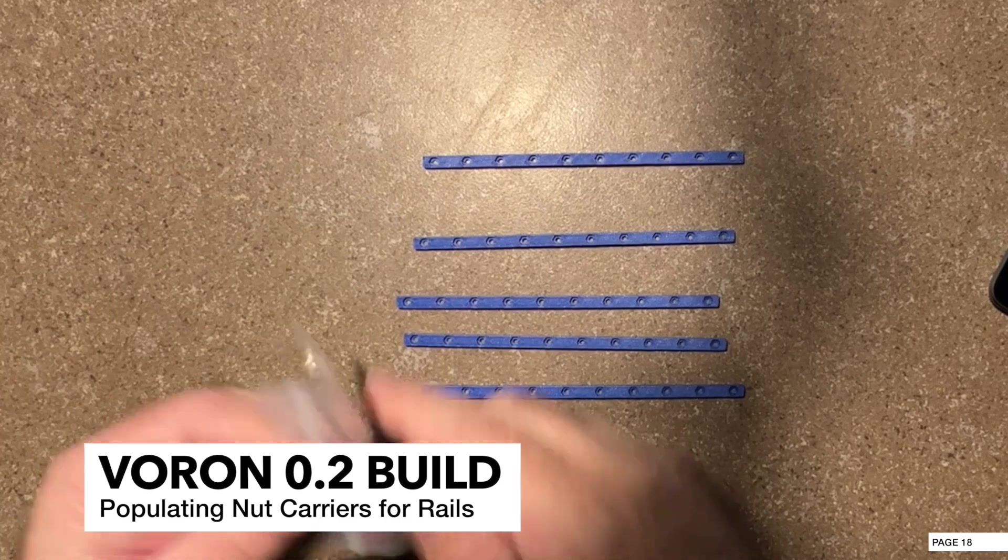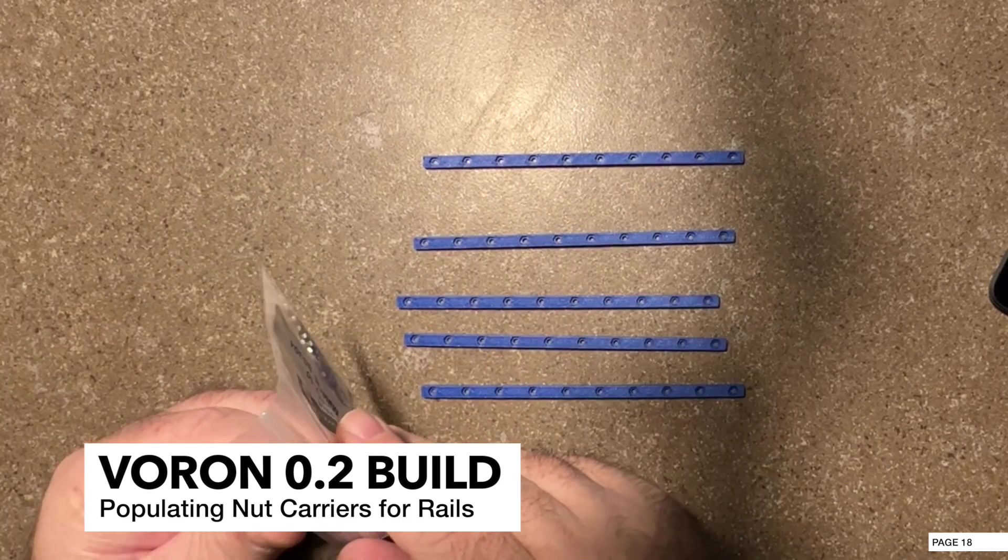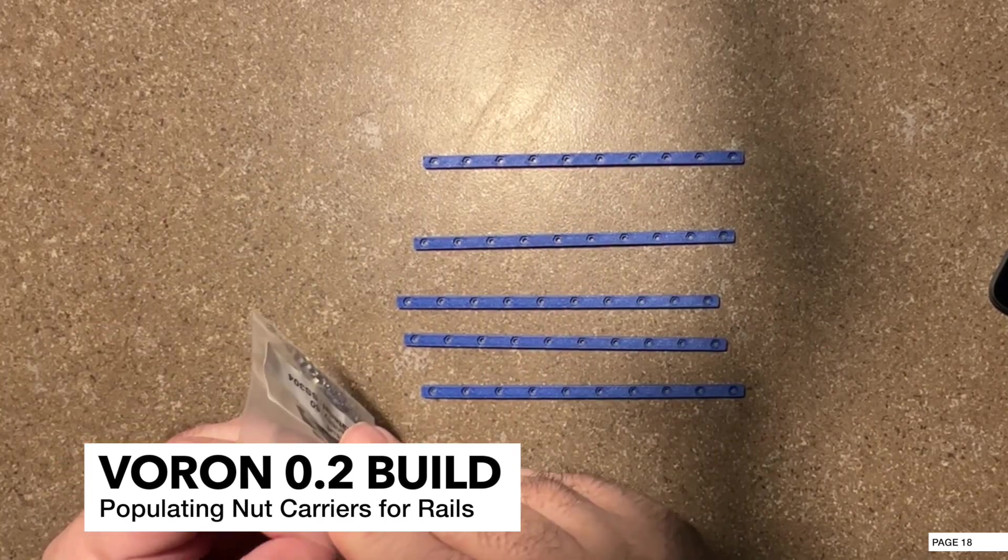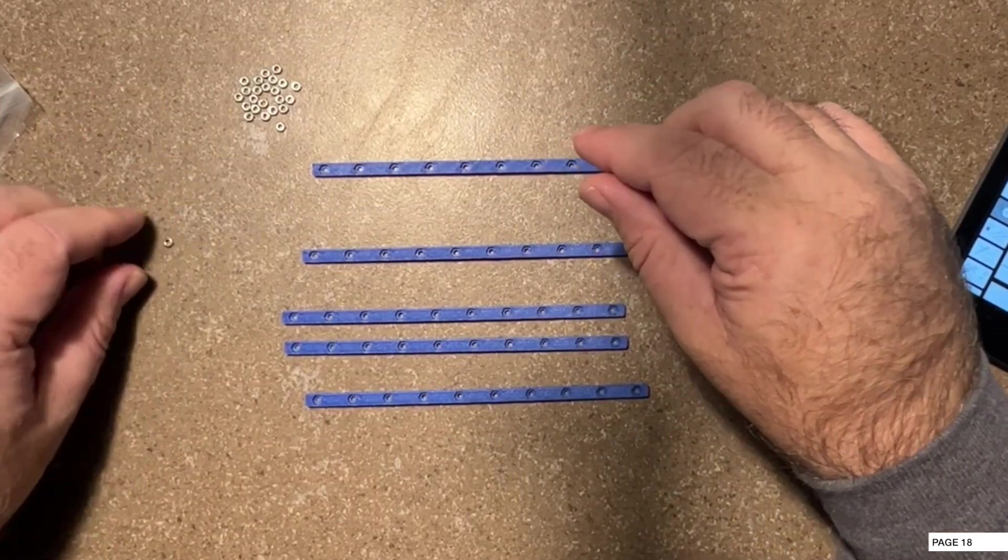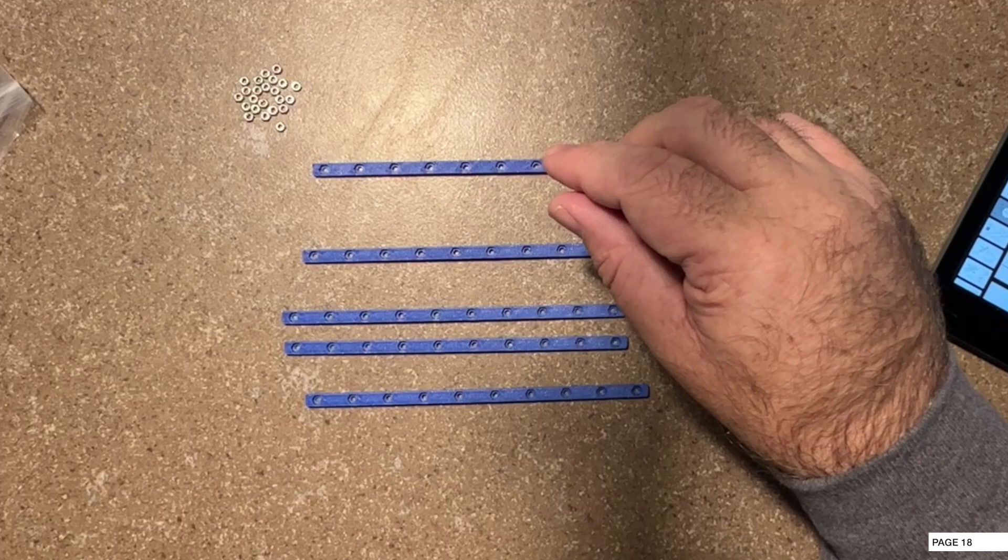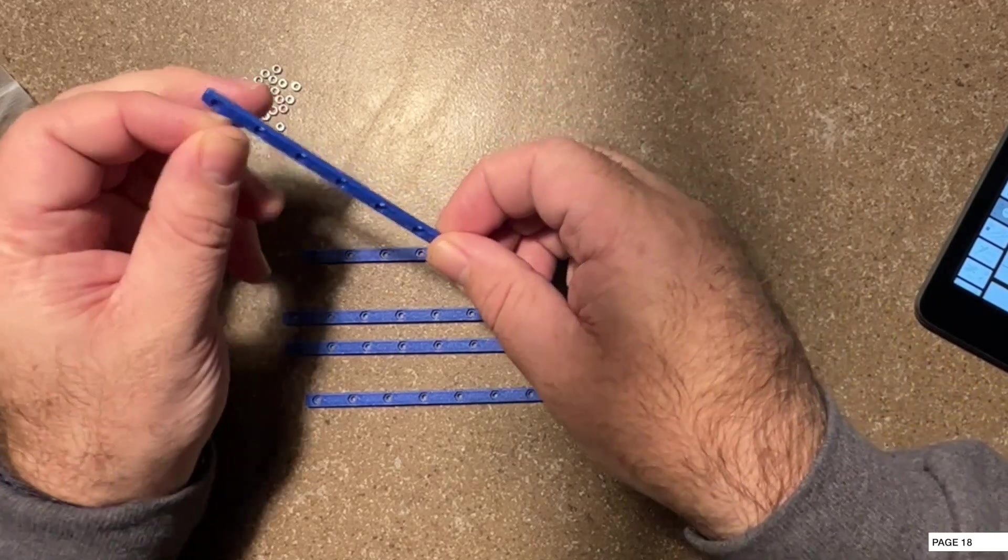We're going to take our M2 nuts and space them out every other hole. We're going to do that for all five of these. Now the instructions say you can populate all of them. I've never done that. There's really no need to, but if you want to, you can.